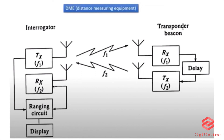We have two signals in the ranging circuit. We have to measure them. If we say that F1 is transmitted, we are transmitted to F2. F1 is transmitted and F2 is received. We have to measure the ranging circuit. If we transmit F1, we receive F2.